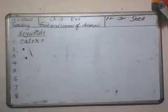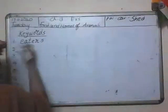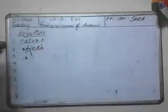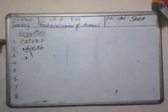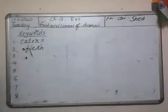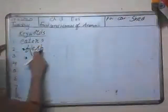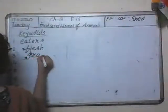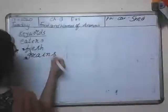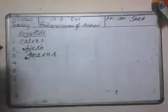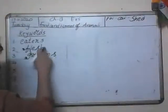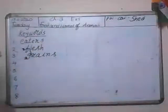Then after 'eaters', the next keyword is 'flesh': F-L-E-S-H, flesh. Then 'grains': G-R-A-I-N-S, grains. So we have flesh eaters and grain eaters.